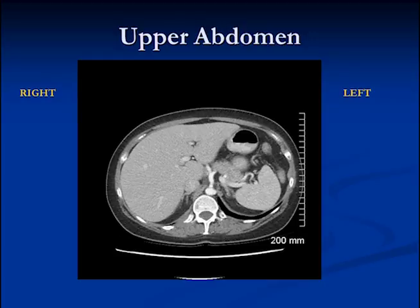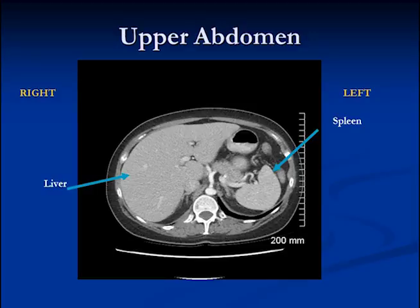This is a view of the upper abdomen. You can see on the right and left sides — this is the liver over here, and we have the spleen on the other side. When you're looking at a CT scan, it's like looking from the feet up through the head, so everything is oriented that way, and the right side is to your left and the left side is to your right.